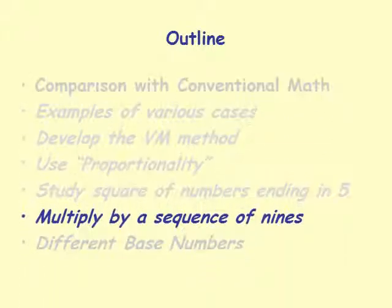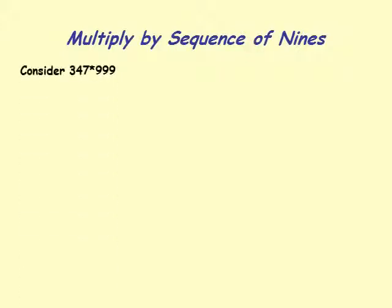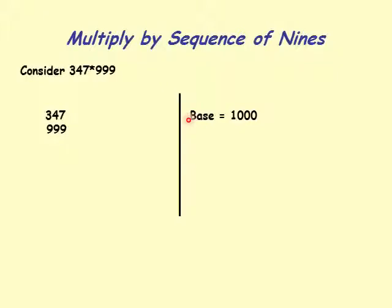The next section is 'Multiply by a Sequence of 9's.' Let's consider an example: 347 times 999. The multiplier has all 9's — it's a sequence of 9's. We write down two numbers for base number multiplication. The base is 1000, which is close to 999.